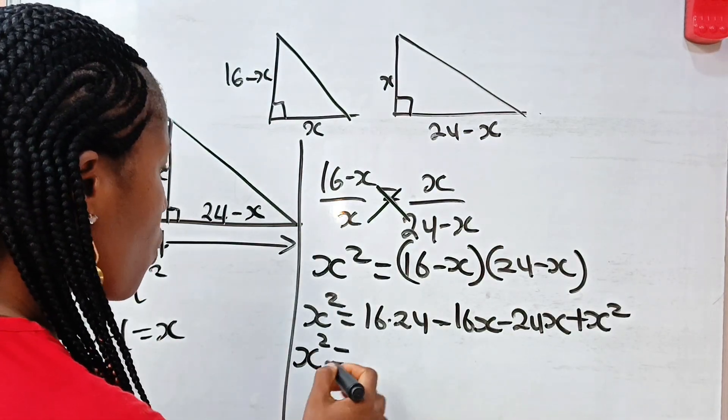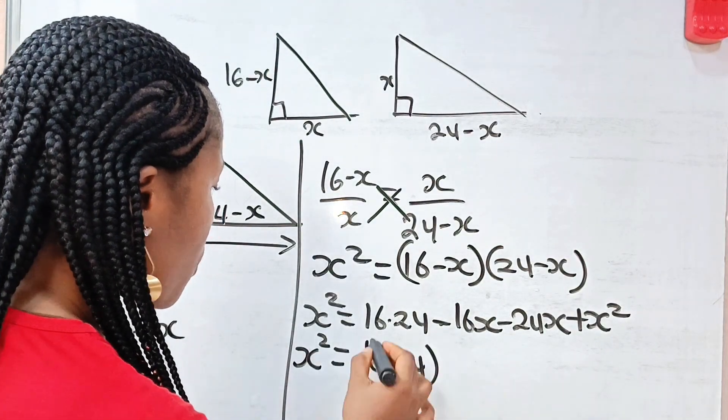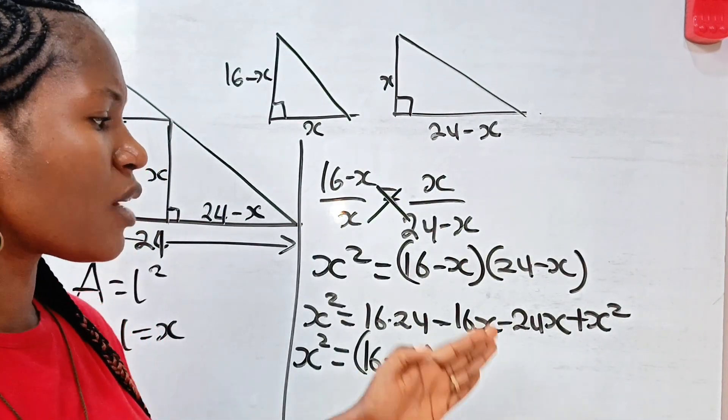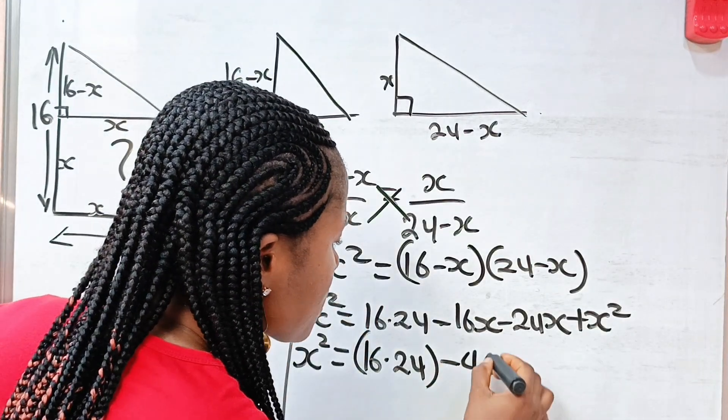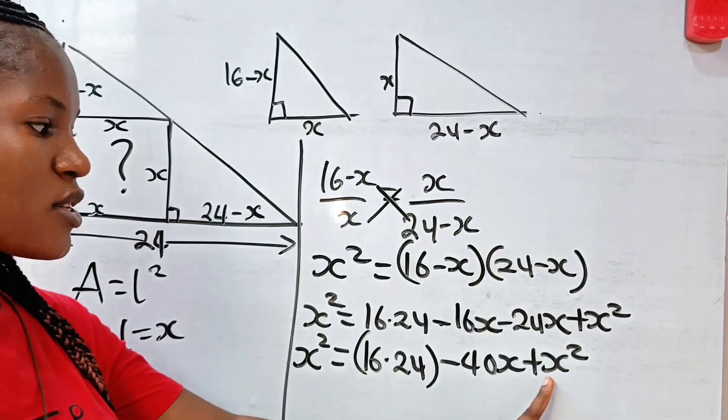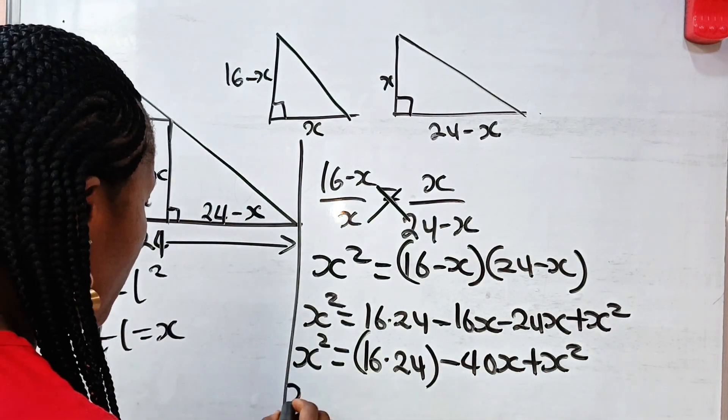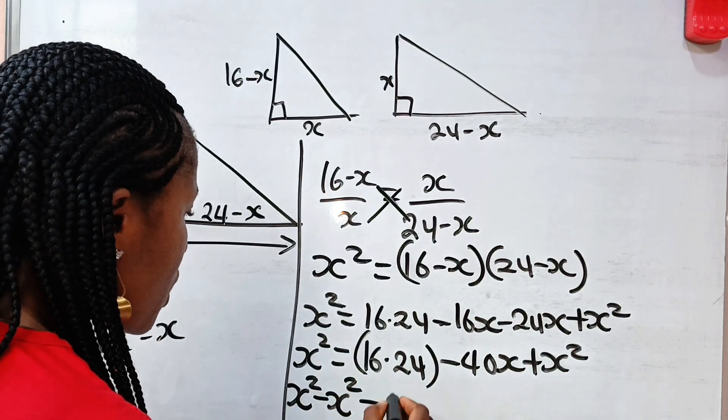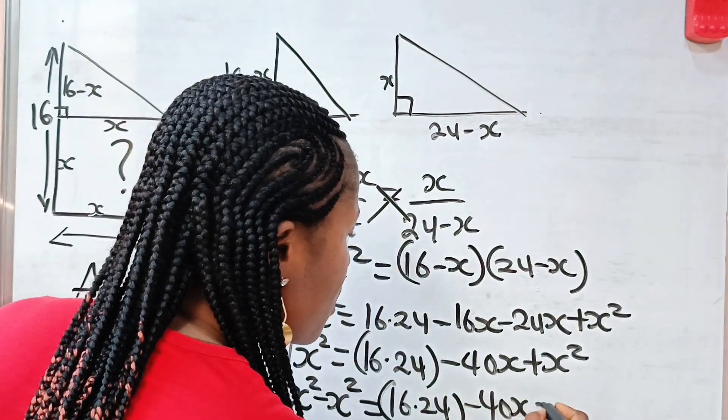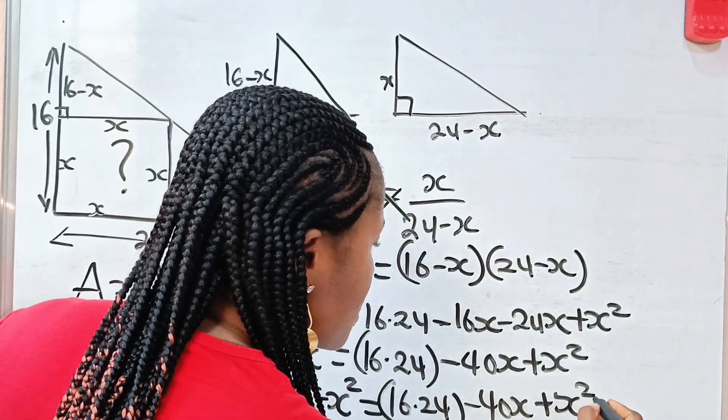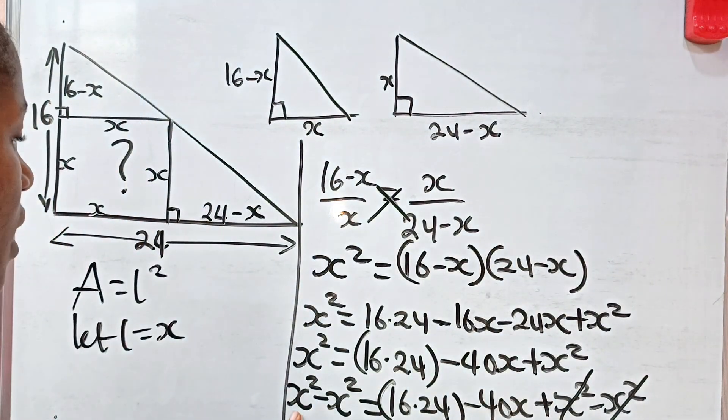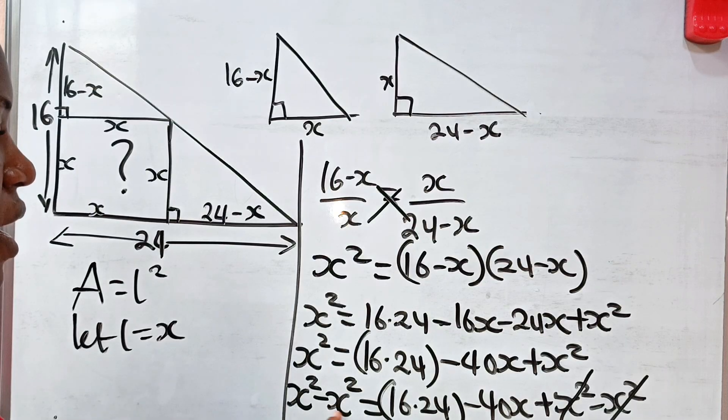So we have X squared is equal to 16 multiplied by 24, then minus 16X minus 24X gives us minus 40X plus X squared. Now, if we collect like terms, let's subtract X squared from both sides of this equation. X squared minus X squared is zero, and X squared minus X squared from the right side also cancels. So we have 0 is equal to 16 multiplied by 24 minus 40X.